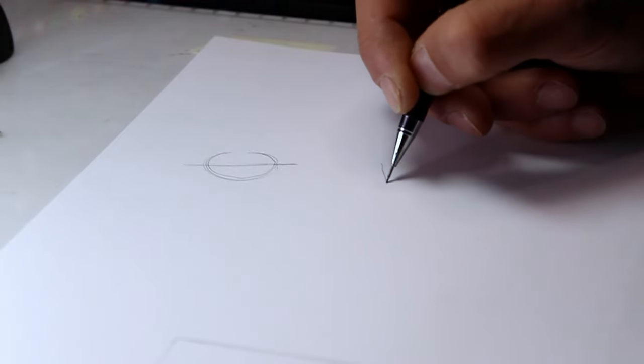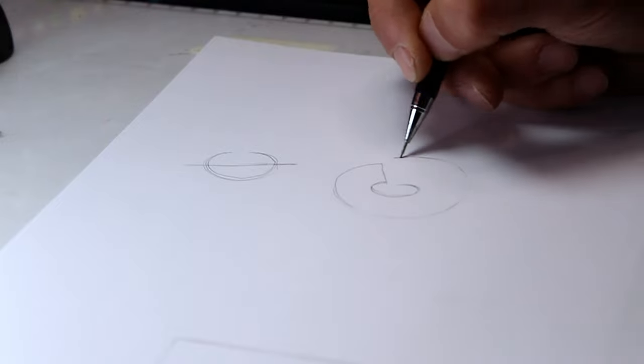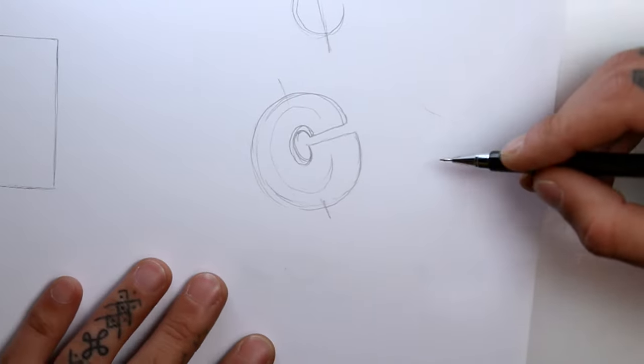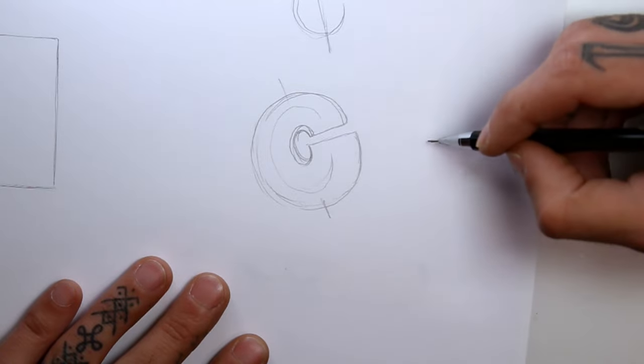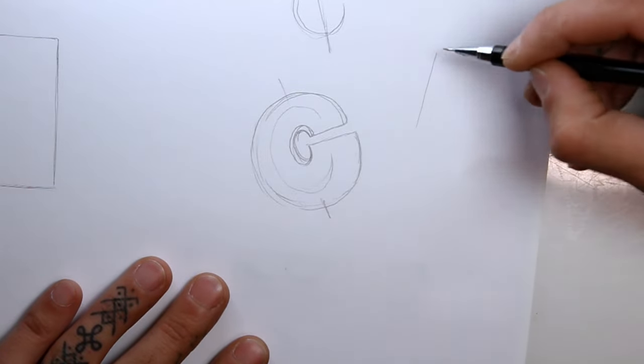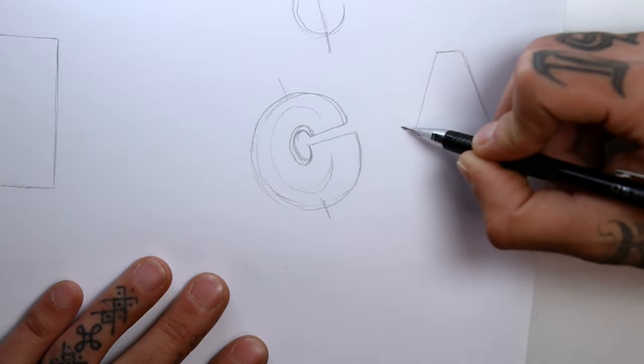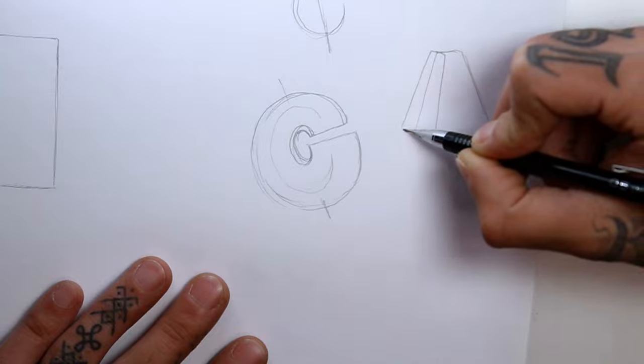Here I will sketch how I would imagine this letter as a block. And I'm gonna show you here on the side how I would draw an A in the same style. Again starting with a simple A shape and using that as a wireframe to make blocks around it.